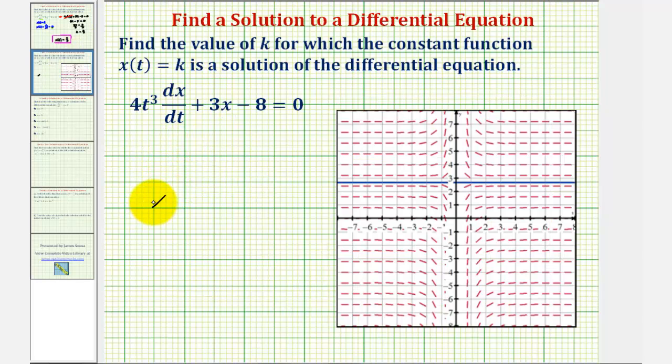First, because our function is x(t) = 8/3, what we normally think of as the x-axis here is really the t-axis, and what we think of as the y-axis is really the x-axis.